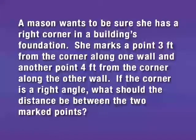A mason wants to be sure she has a right corner in a building's foundation. She marks a point 3 feet from the corner along one wall and another point 4 feet from the corner along the other wall. If the corner is a right angle, what should the distance be between the two marked points?